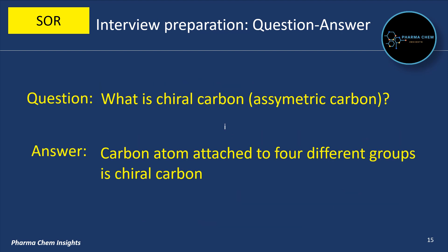What is chiral carbon? Chiral carbon is also called asymmetric carbon. A carbon atom attached to four different groups is called a chiral carbon.